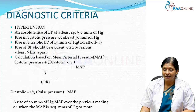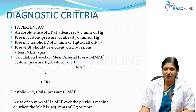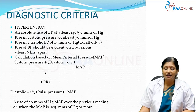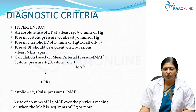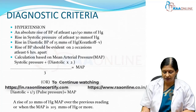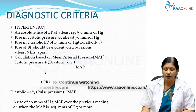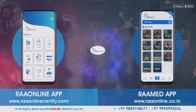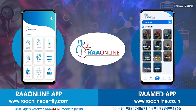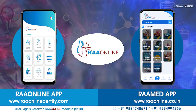The diagnostic criteria for pre-eclampsia include: an absolute rise of blood pressure more than 140/90; systolic pressure rise of more than 30; diastolic pressure rise of more than 15. In pregnancy, we use the Korotkoff fifth sound, not the fourth. This rise in blood pressure should be recorded on two occasions six hours apart. Mean arterial pressure is calculated as diastolic pressure plus one-third of pulse pressure. A rise of 20 mmHg in mean arterial pressure, or an absolute mean arterial pressure of more than 105, is also considered hypertension in pregnancy.